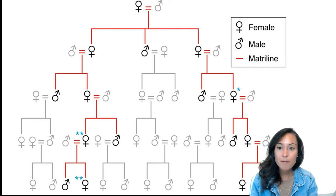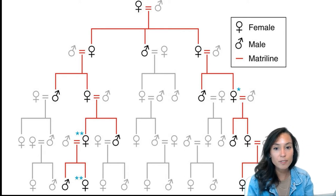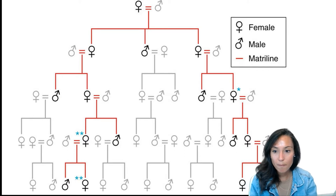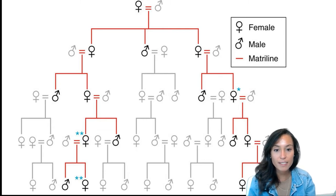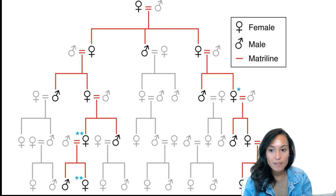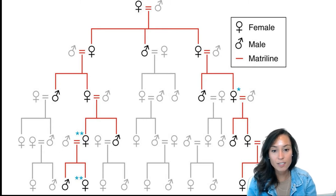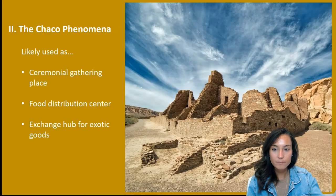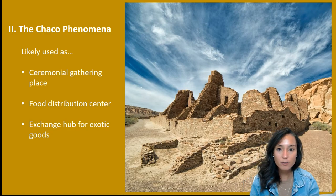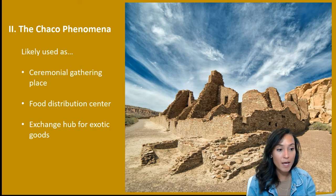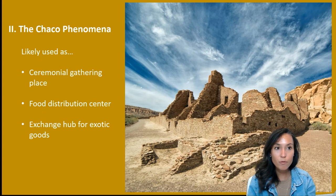The diagram shown here provides a hypothetical outline of the Chacoan matrilineal line and system of rule. The matrilineal members are highlighted in red, and the blue shows the grandmother-grandson relationship suggested from testing of crania 8 and 10 from Room Block 33. From this evidence, we know there was definite social hierarchy at Chaco, and that women were likely in charge of much of the ceremonial life there.